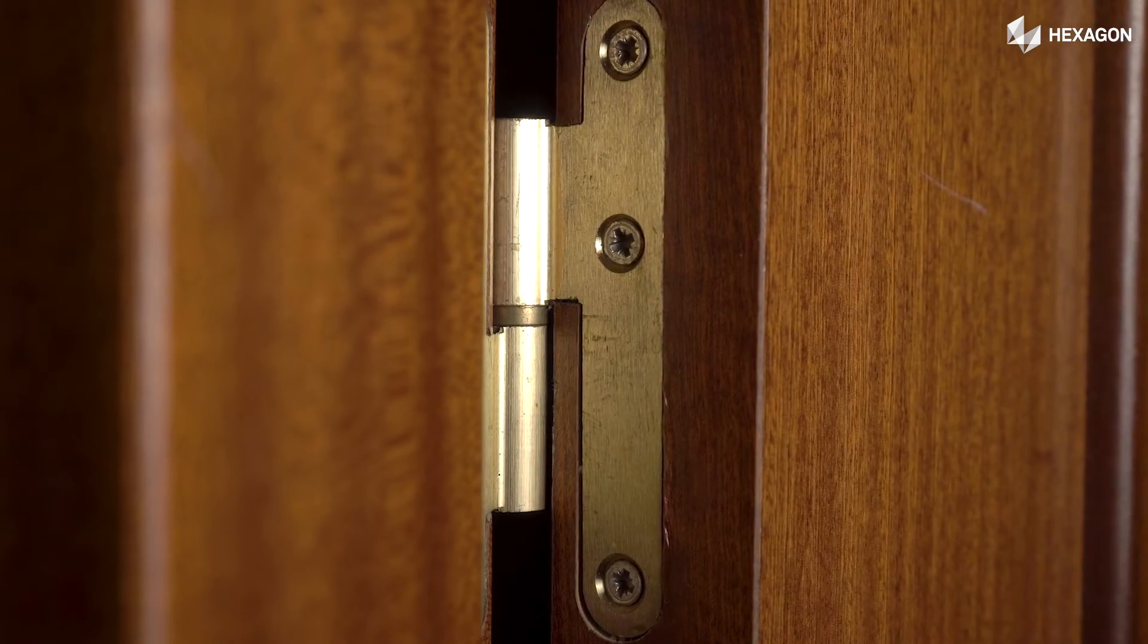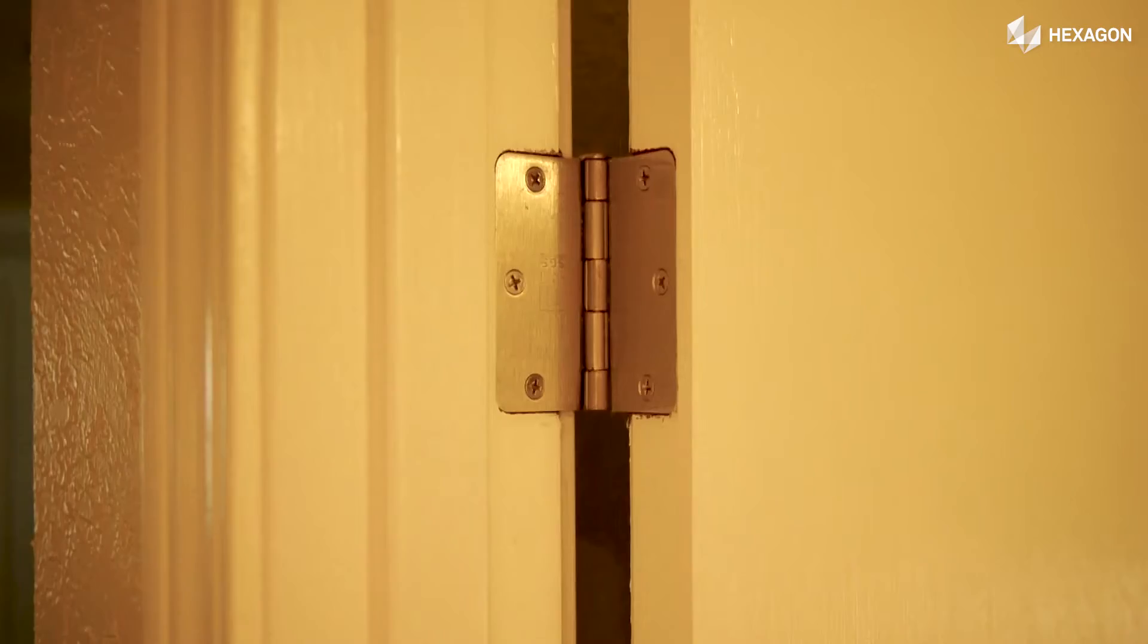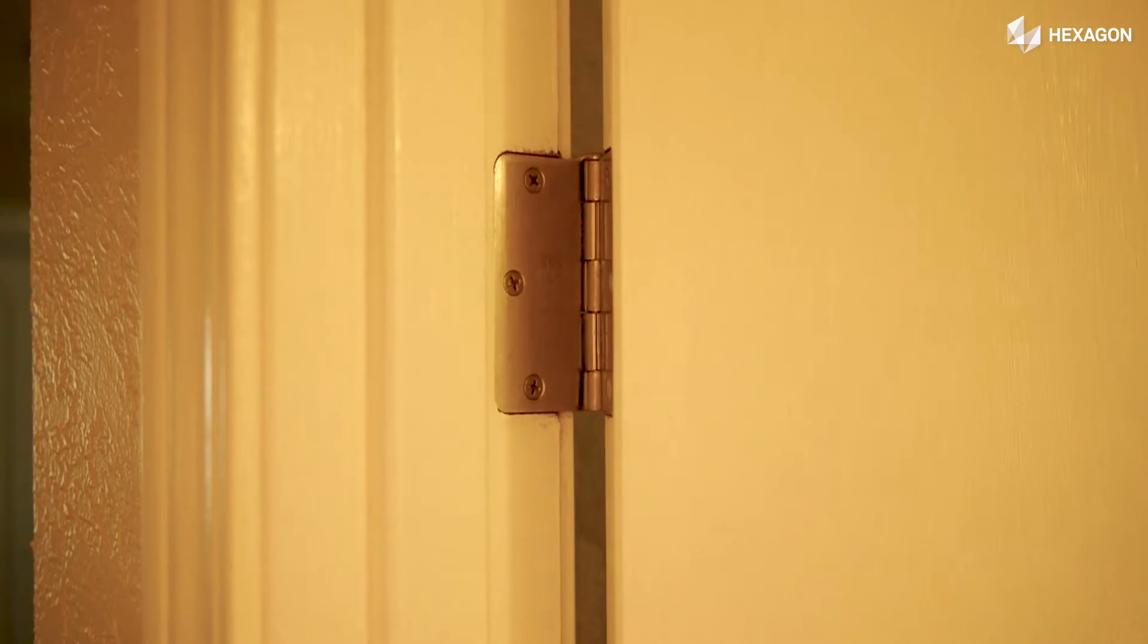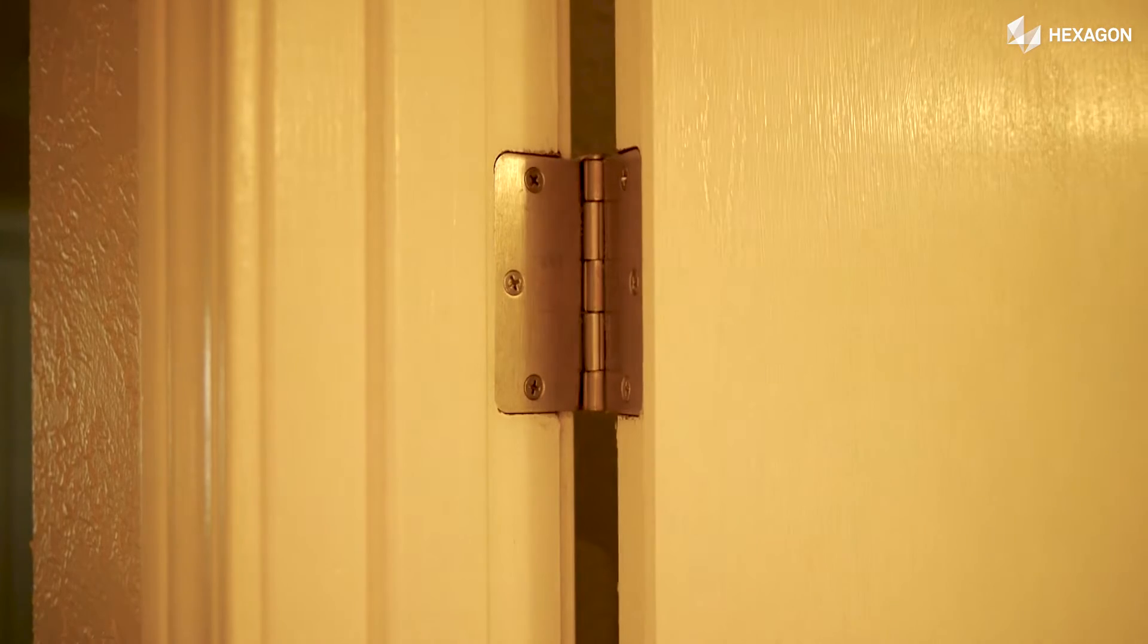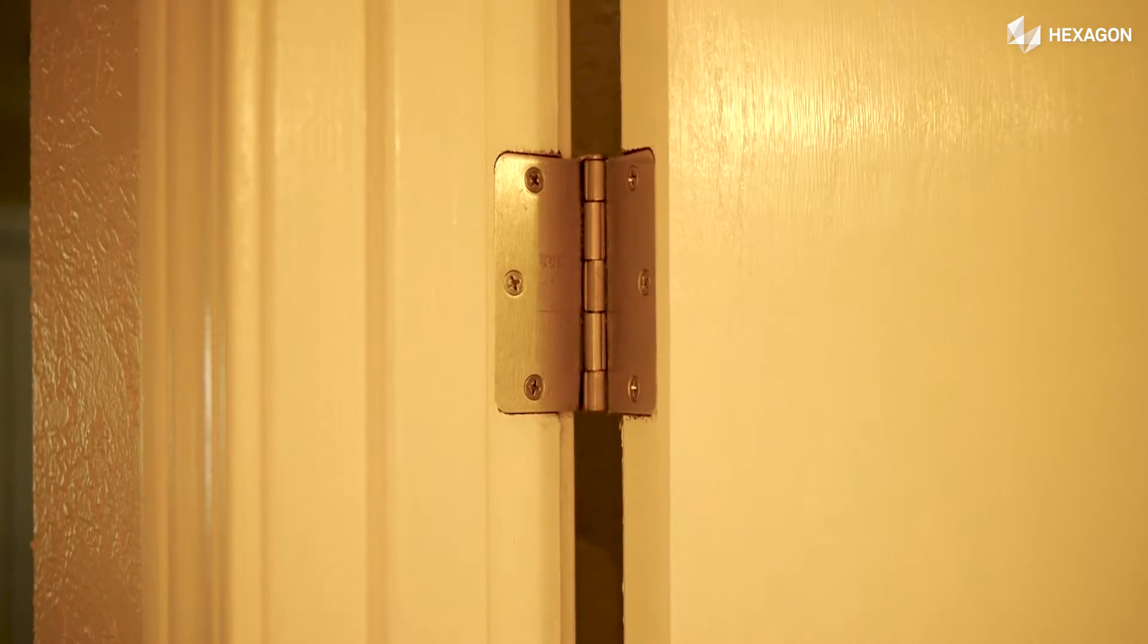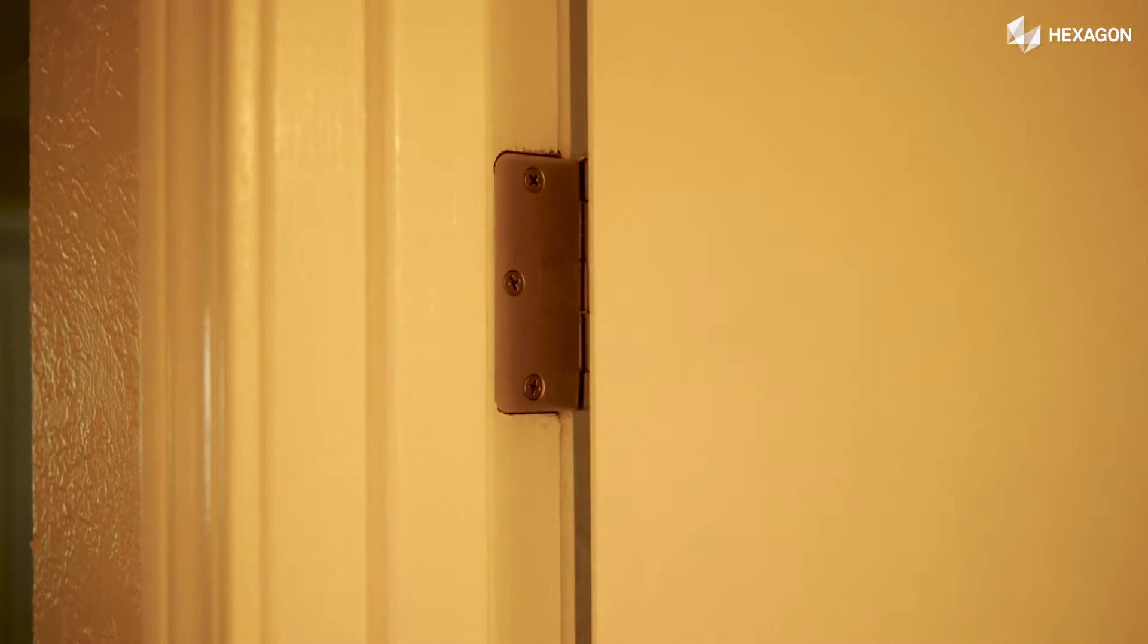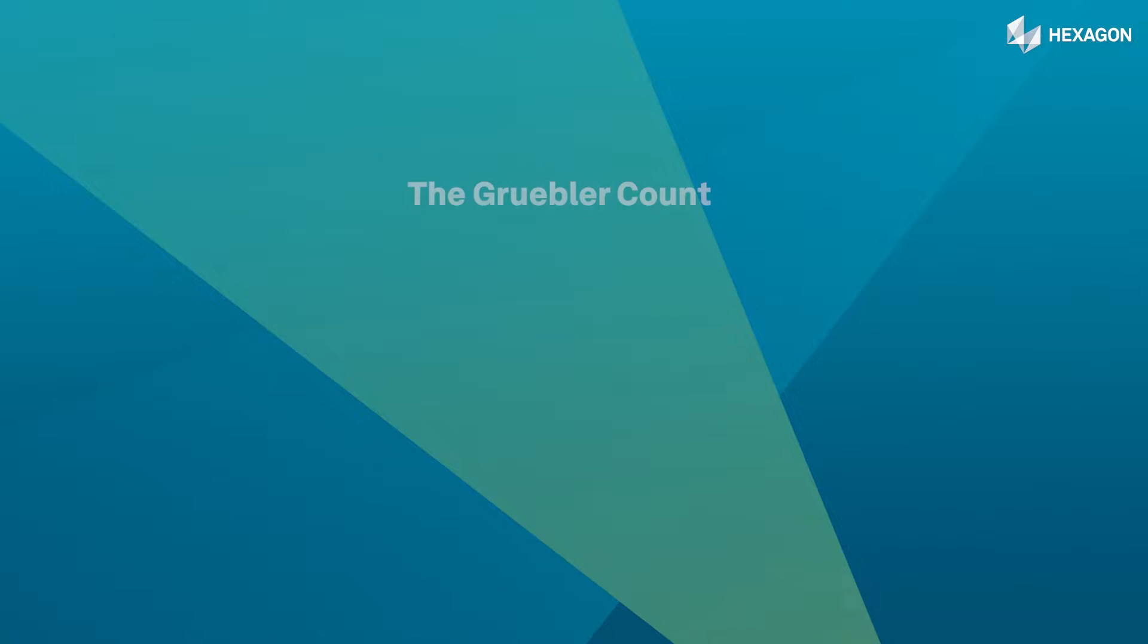Thus we say it is a one degree of freedom joint. Now how many hinges does a door really need? Well theoretically it only needs one. However, for additional strength and support most doors use two or three hinges. But it's important to note that these additional joints represent what are called redundant constraints.